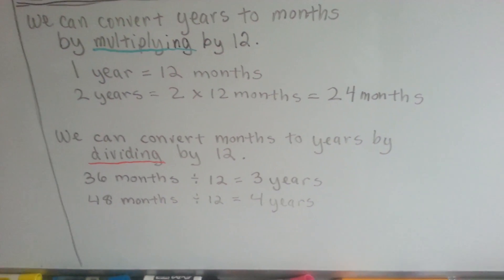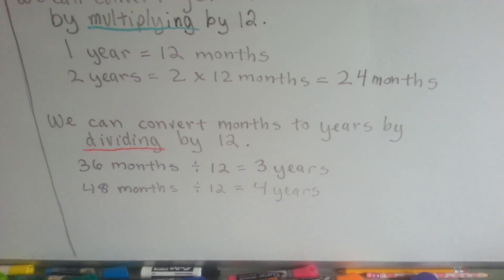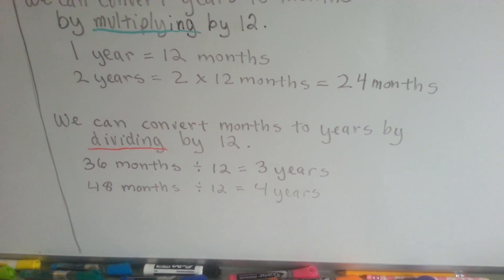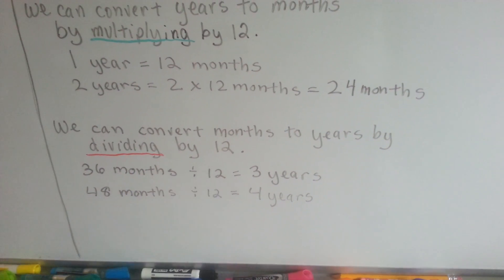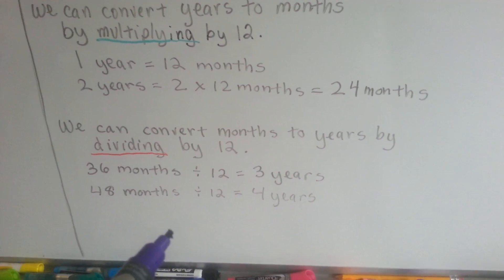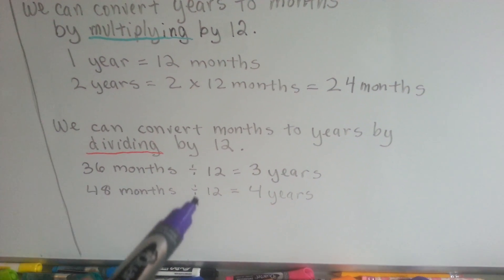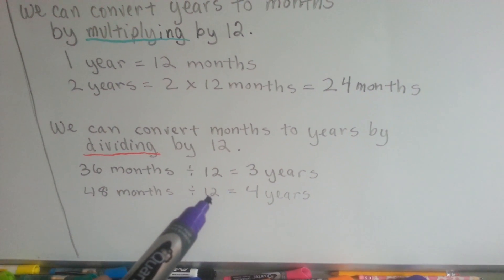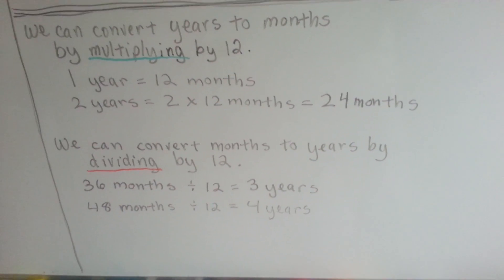Sometimes you'll hear someone say, 'My baby is 18 months.' Well, that's a year and a half old, because if we divide by 12, we'd see that it's 1 and a half. 48 months divided by 12 months of a year is 4 years.